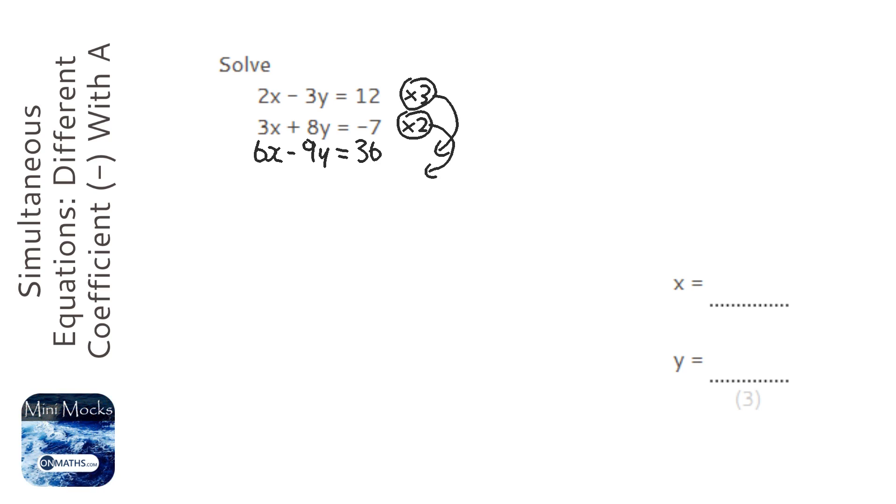And I'm going to times the bottom one by 2, so we get the 6x, so we have these the same, plus 16y equals minus 14.